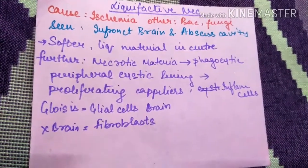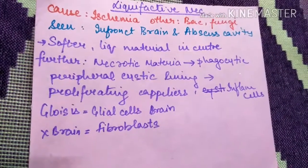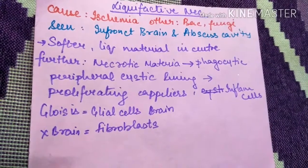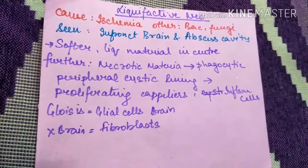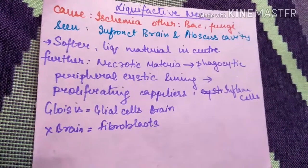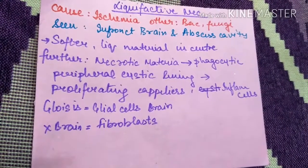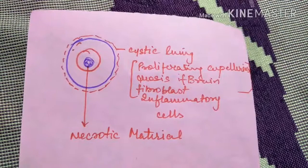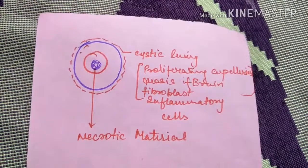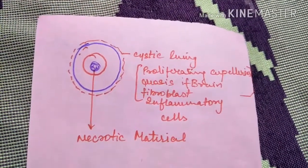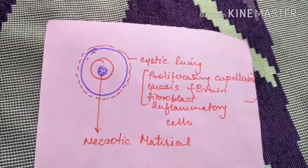Liquefactive necrosis — its main cause is ischemia, whereas other causes can be bacterial or fungal. It is seen in infarct of brain and abscess cavity, which has softer, liquid material at the center. The necrotic material has a phagocytic lining with proliferating capillaries and inflammatory cells. In the diagram of liquefactive necrosis, you can see necrotic material with cystic lining having proliferating capillaries, glial cells in brain, and fibroblasts.